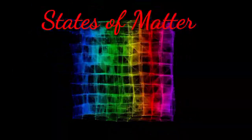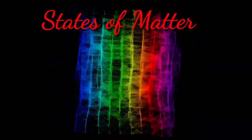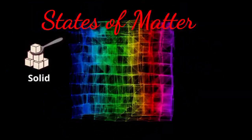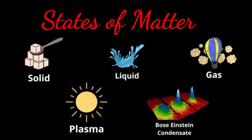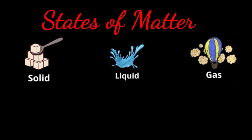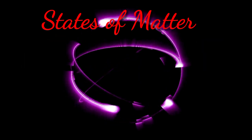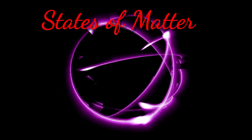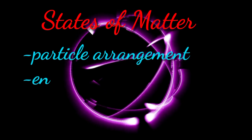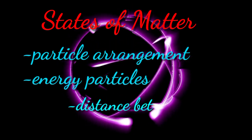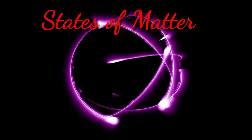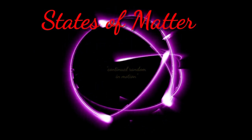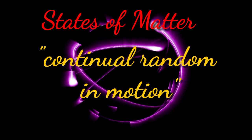The states of matter. Matter has different states: solid, liquid, gas, plasma, and Bose-Einstein condensate. We will focus on solid, liquid, and gas. When we say states of matter, it is based upon particle arrangement, energy of particles, and distance between particles. Matter is made up of particles which are in continual random motion.